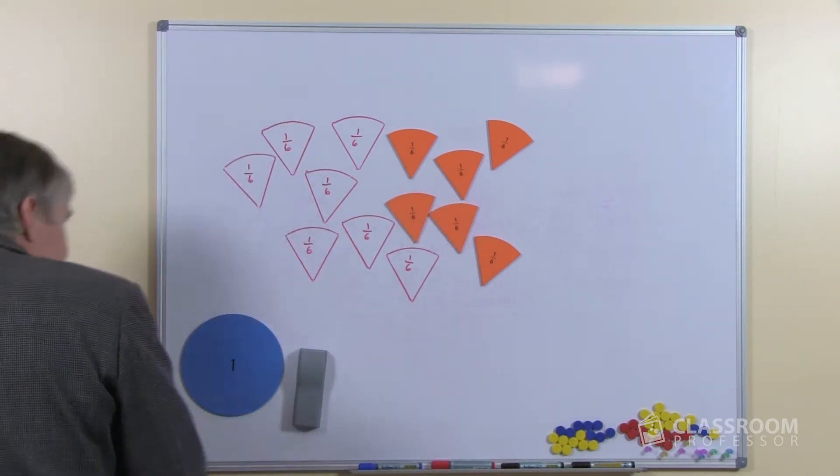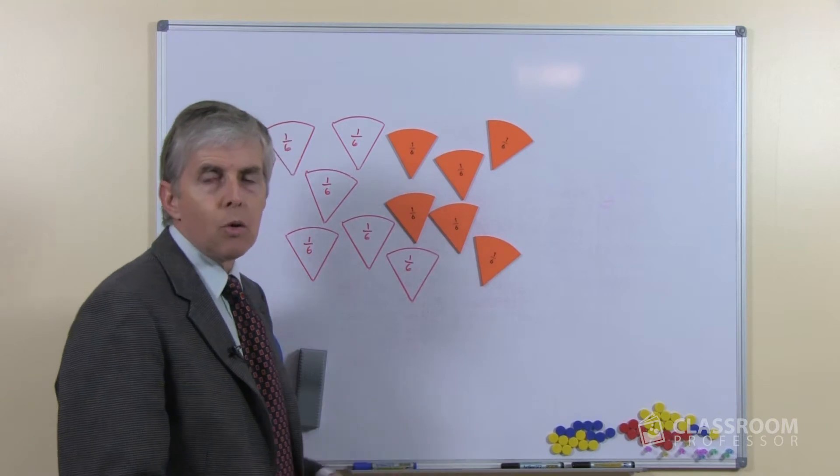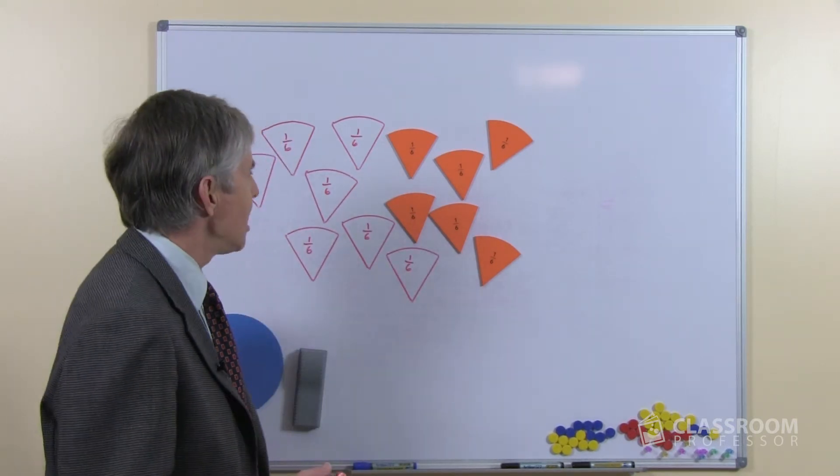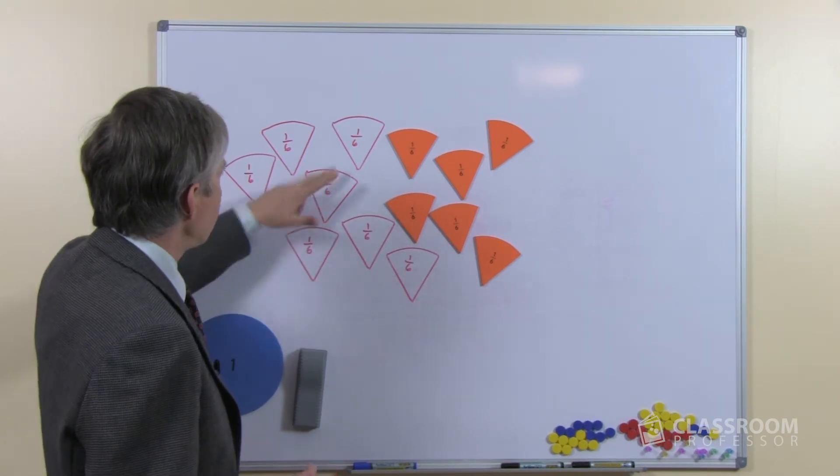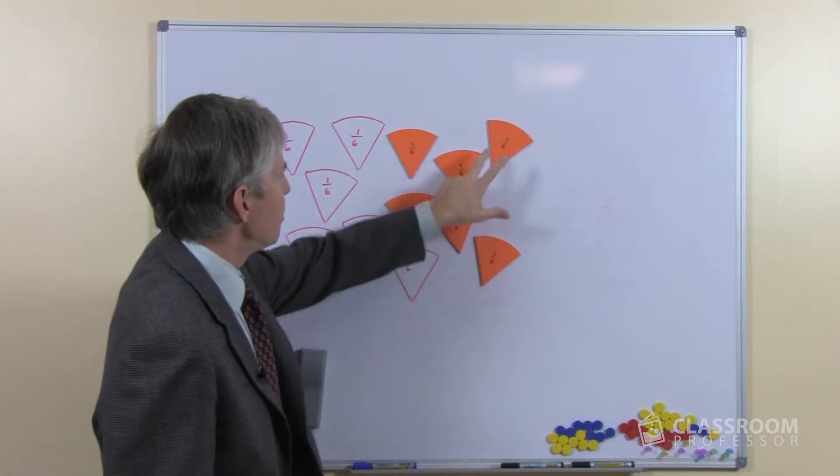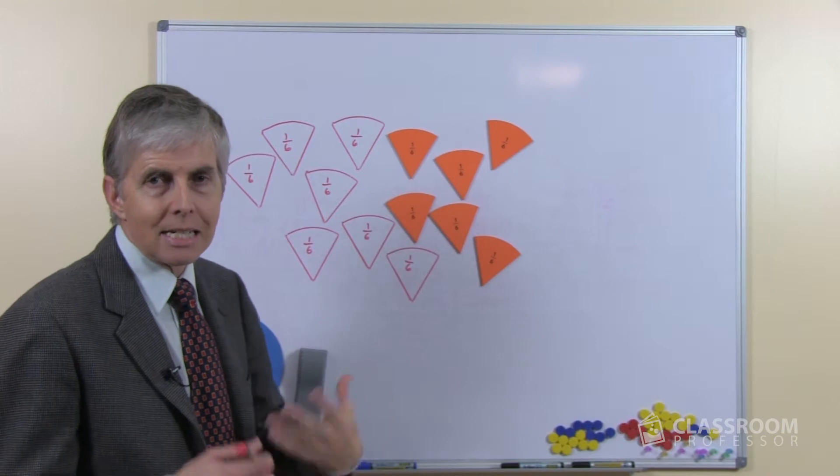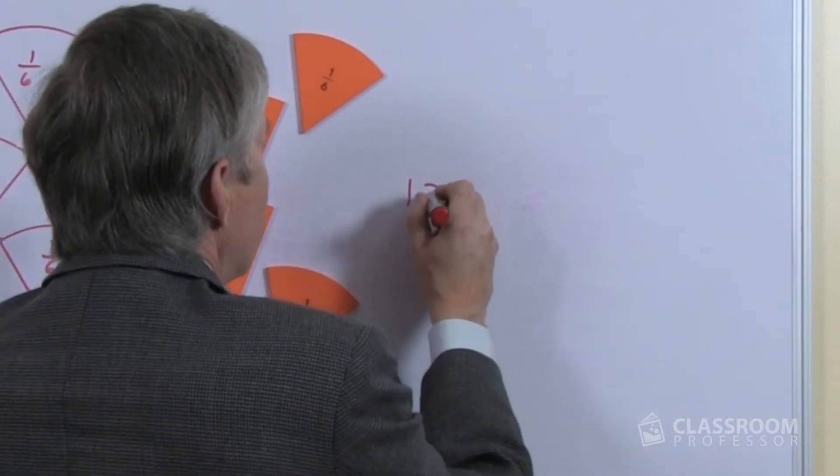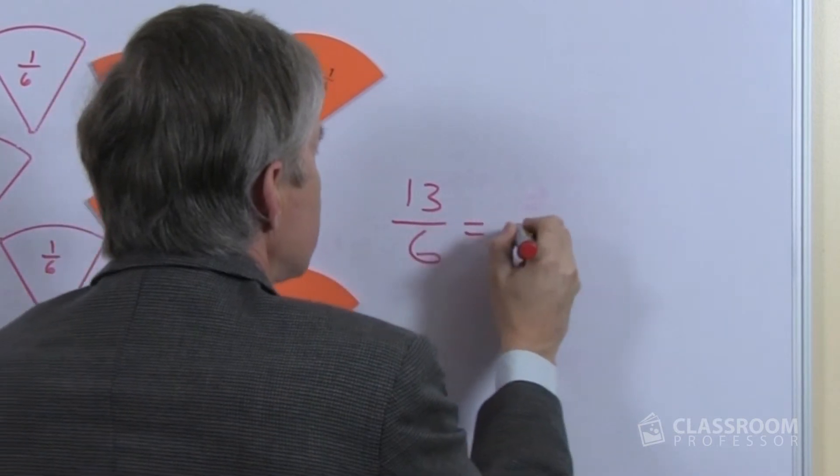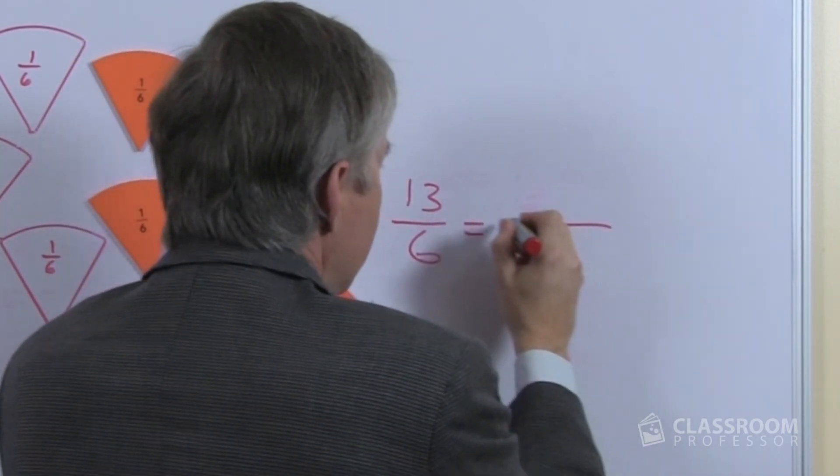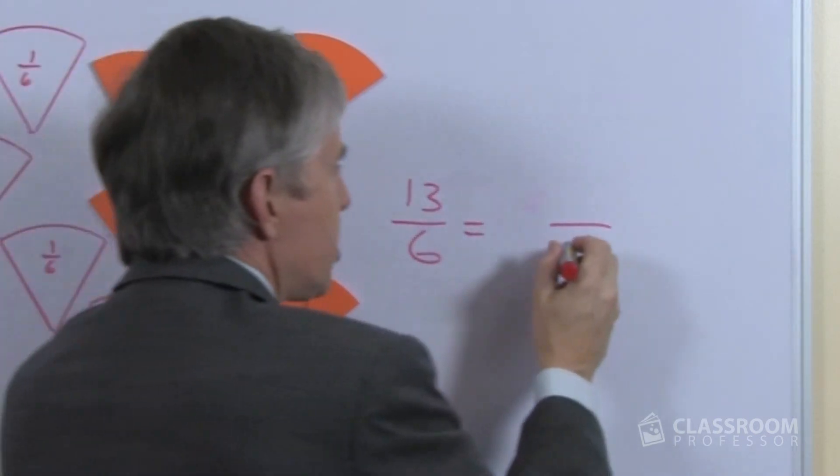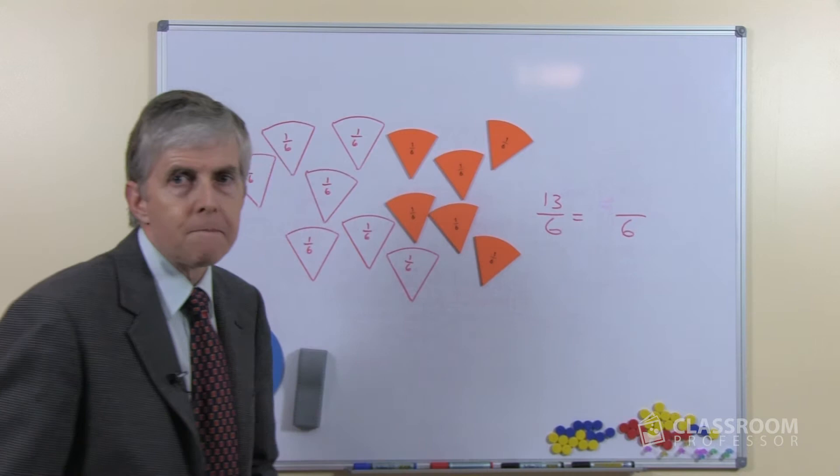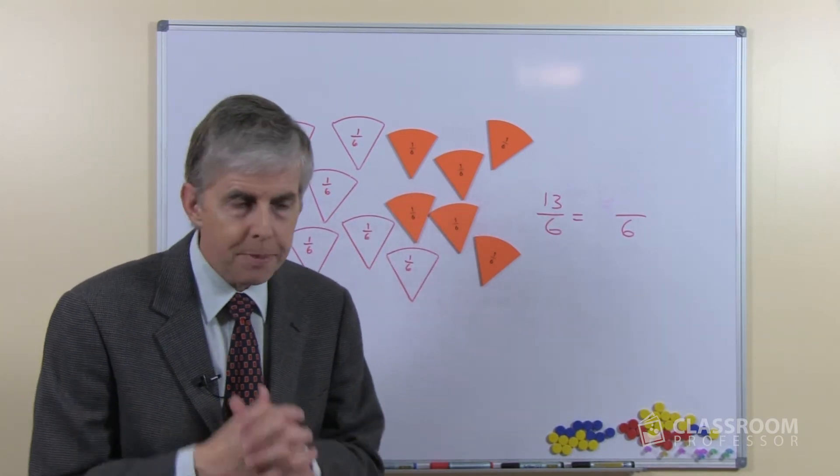Here we have a number of sixths and we're going to find out what this is equal to as a mixed number. So we've got 1, 2, 3, 4, 5, 6, 7, 8, 9, 10, 11, 12, 13 sixths, what will that number be? Over here we're going to write 13 sixths equals something. It will be a whole number and a number of sixths, and we want our students to work out what the answer will be.